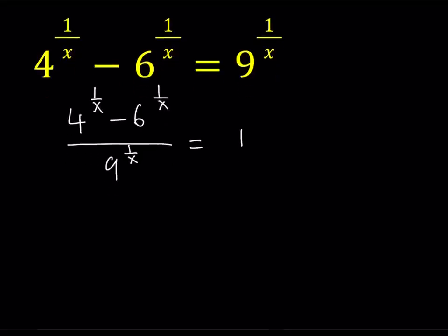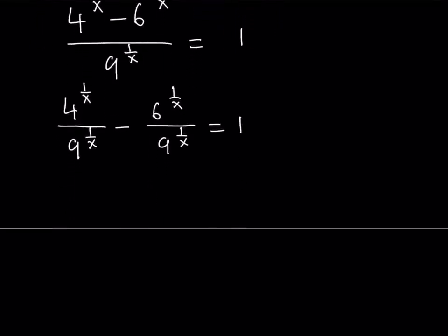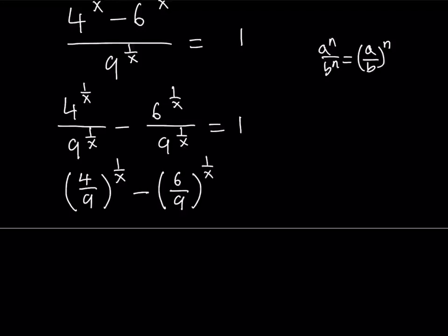So once I do the division, I can just go ahead and separate them. And let's just write it that way. I don't want to skip any steps here to explain everything clearly. So then we can just write it like this. And of course, we have one on the right-hand side. Now, notice that in both fractions, our exponents are the same, which means that we can just write them with a common exponent. In other words, using the property a to the power n divided by b to the power n as a over b to the power n. So, I can write this as 4 over 9 to the power 1 over x minus 6 over 9 to the power 1 over x. And that equals 1.